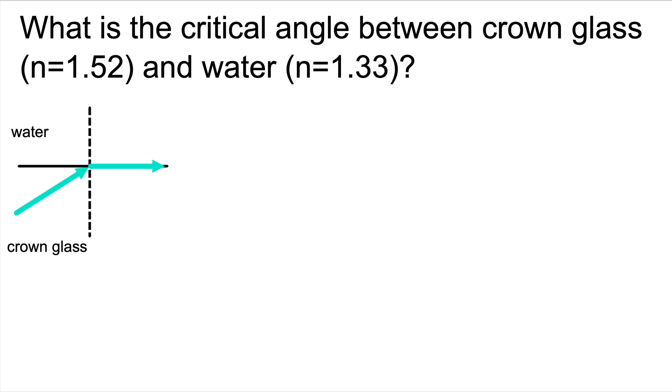The reason we know it's coming from the crown glass is that when light travels from a more optically dense material to a less optically dense material, the light bends away from the normal line. So in order for the angle of refraction to be 90 degrees, the light needs to move from the more optically dense material, crown glass, to the less optically dense material, which is the water.